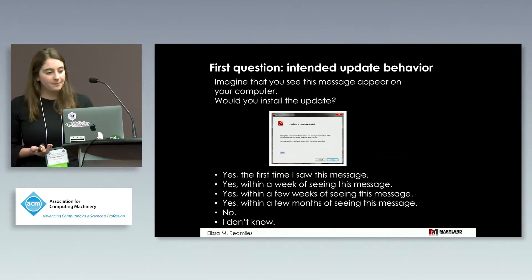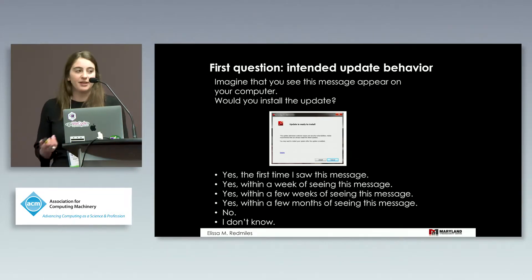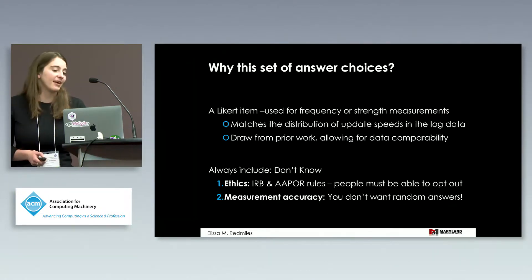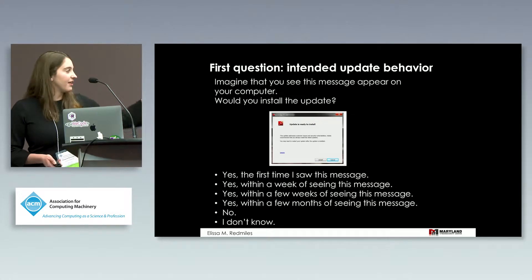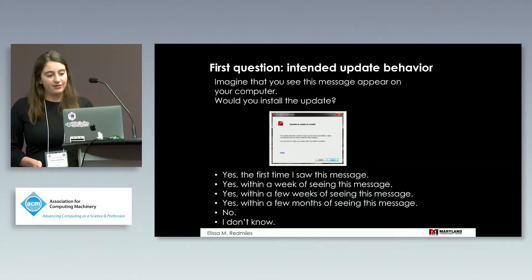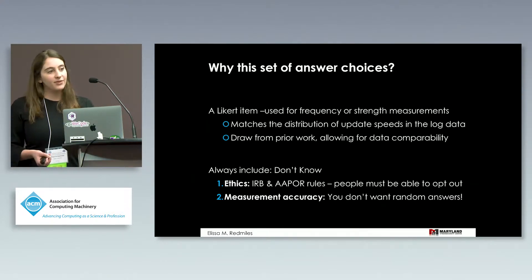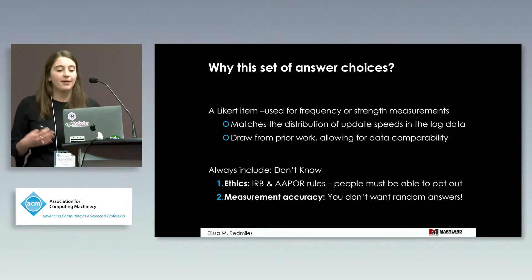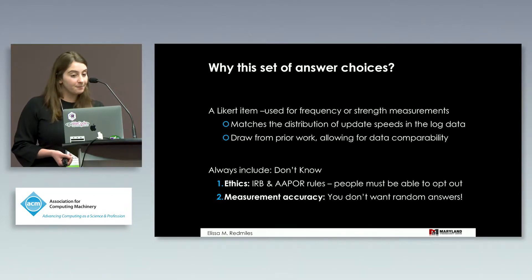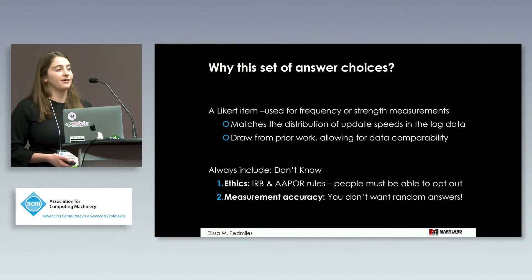We constructed a survey asking participants: 'Imagine that you see this message appear on your computer — would you install the update?' We provided answer choices for how quickly they would intend to install the update. This set of answer choices represents a Likert scale: 'the first time I see it,' 'within the week,' 'within a few weeks,' and so forth. We picked these answer choices to match the distribution of frequencies in the log data so we could easily map between the two, and we phrased our question to match prior work on software updating.